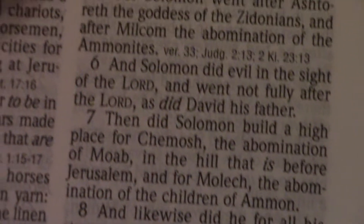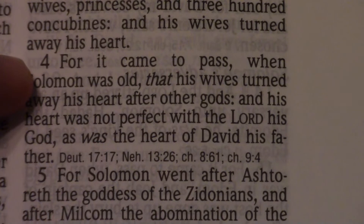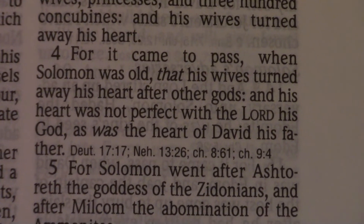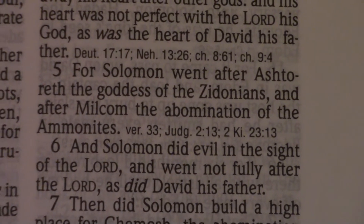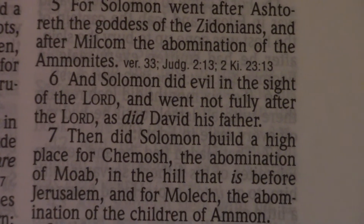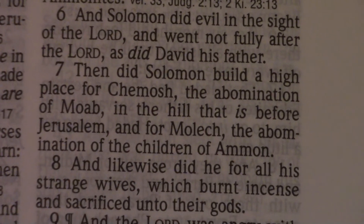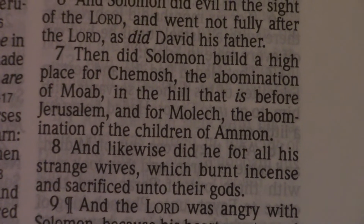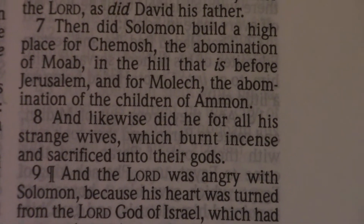This is 1 Kings 11, verses 4 through 8. For it came to pass when Solomon was old that his wives turned away his heart after other gods, and his heart was not perfect with the Lord his God, as was the heart of David his father. For Solomon went after Ashtoreth, the goddess of the Zidonians, and after Milcom, the abomination of the Ammonites. And Solomon did evil in the sight of the Lord, and went not fully after the Lord, as did David his father. Then did Solomon build a high place for Chemosh, the abomination of Moab, in the hill that is before Jerusalem, and for Molech, the abomination of the children of Ammon. And likewise did he for all his strange wives, which burnt incense and sacrificed unto their gods.